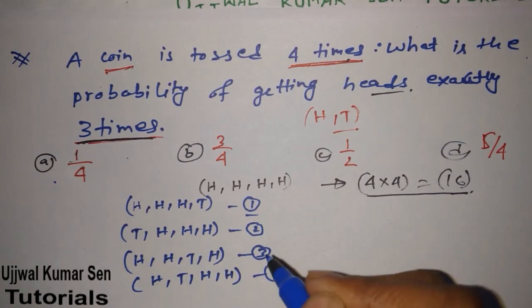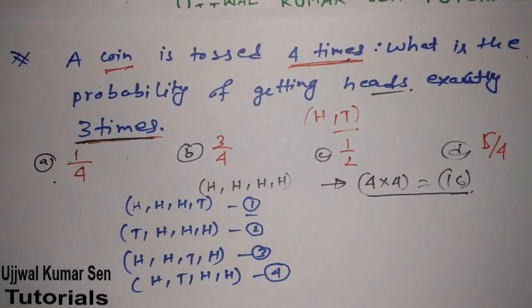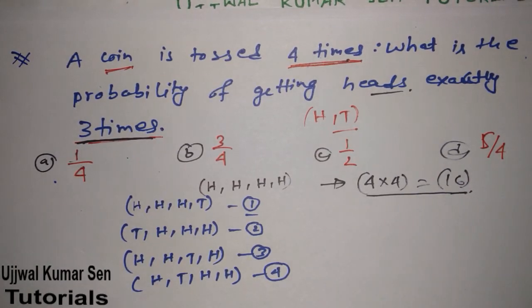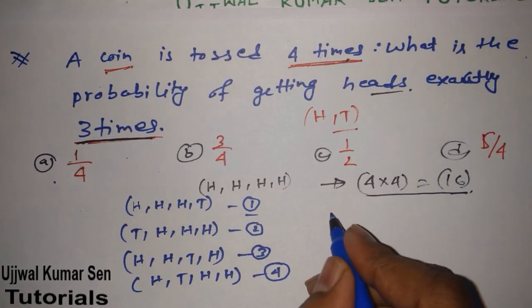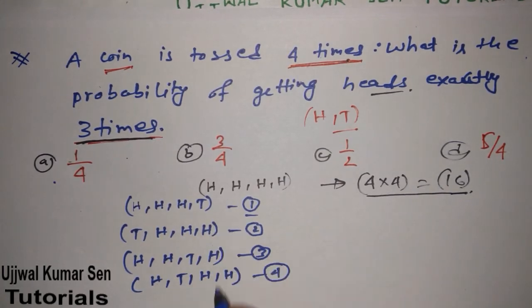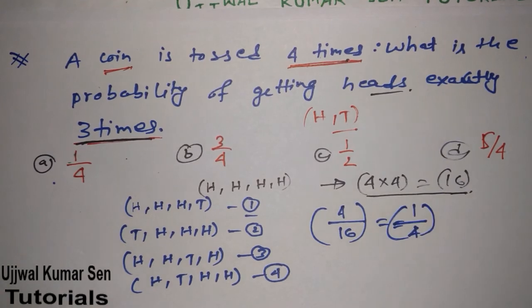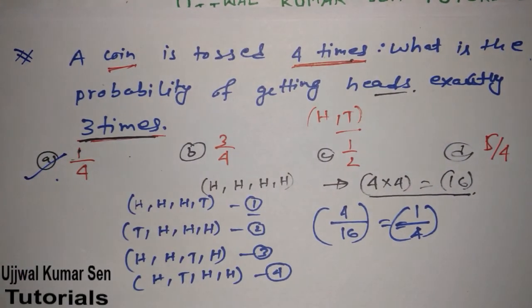We cannot get more than four such combinations. The total sample space is 16, and our favorable outcomes — exactly three heads — is only four. The simple formula for probability is favorable outcomes divided by total sample space, so 4/16 = 1/4. Option A is the right answer for this question.